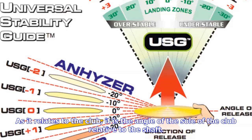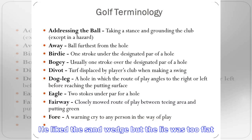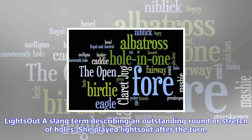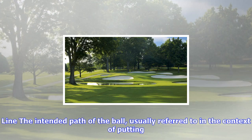Half shot: a shot played with an abbreviated swing and reduced swing speed. This shot is often played when trying to keep the ball out of a strong wind. With so much at stake, Amy Alcott played a half shot to the final green and made a comfortable par.